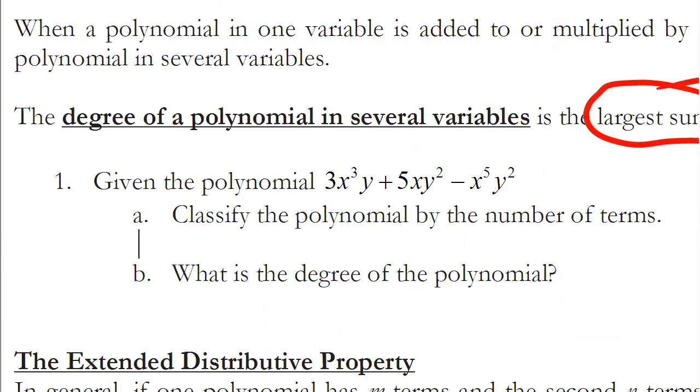Let's take a look at example one on your notes. It says, first of all, classify the polynomial by the number of terms that it has. As I look at that polynomial, each term is separated by a plus or minus sign. Therefore, since there is one, two, three terms, we would say this is a trinomial.